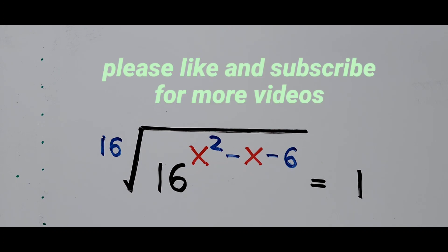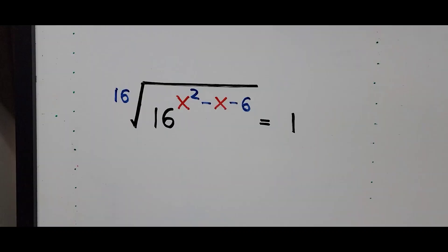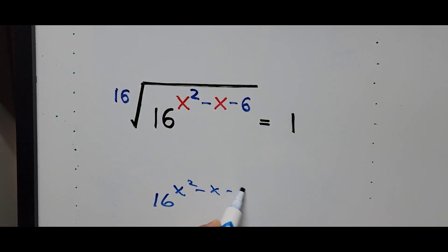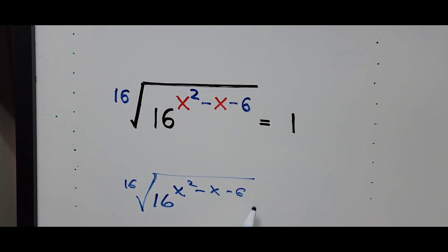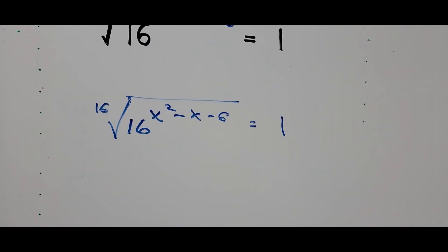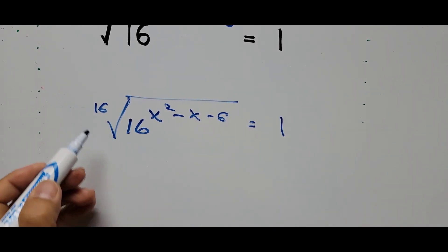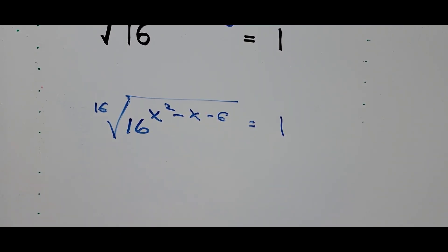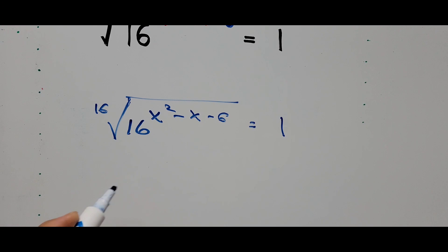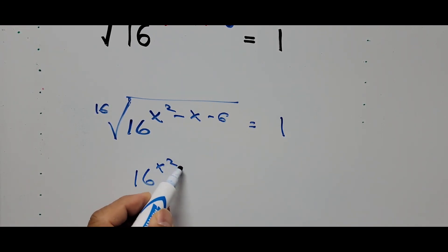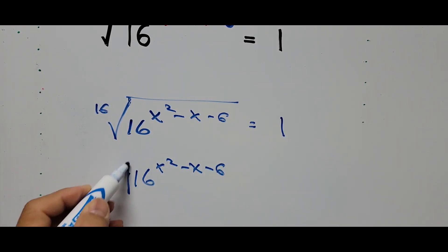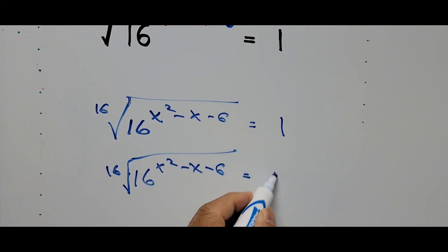Let's start solving the problem. The equation is the 16th root of 16 to the power x squared minus x minus 6, equals 1. The next step is getting rid of that 16th root, so we raise the whole equation to the exponent 16.